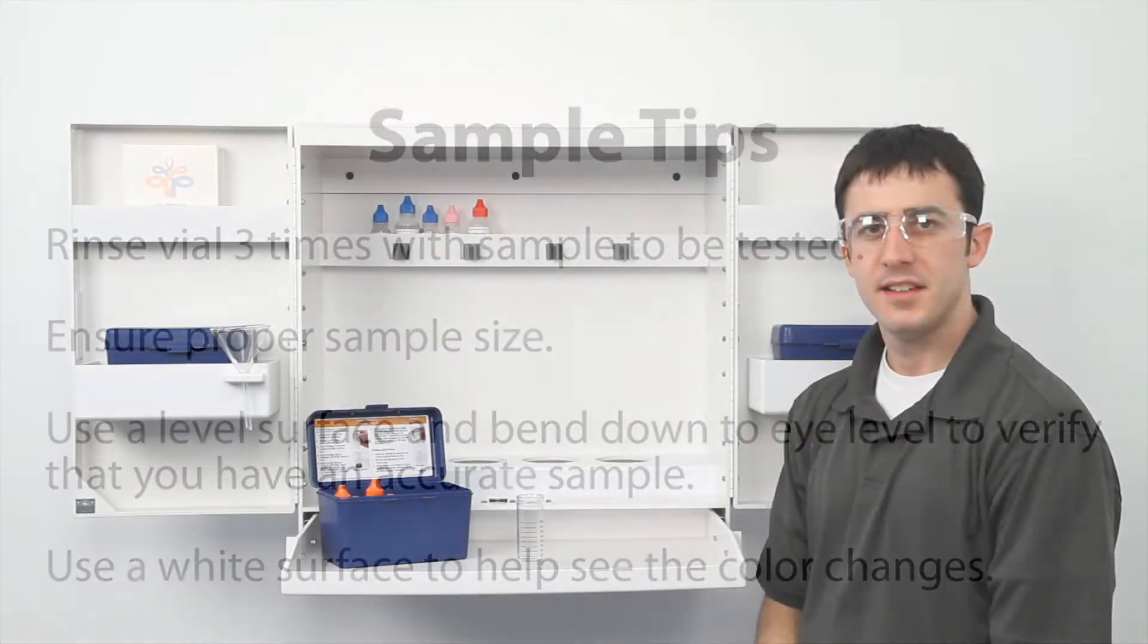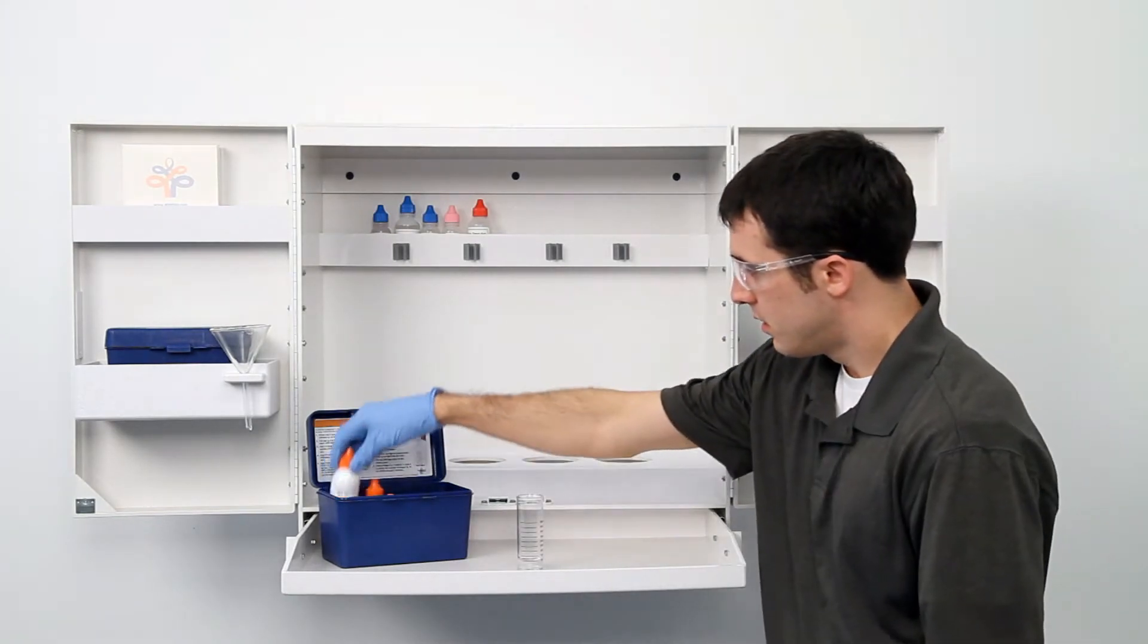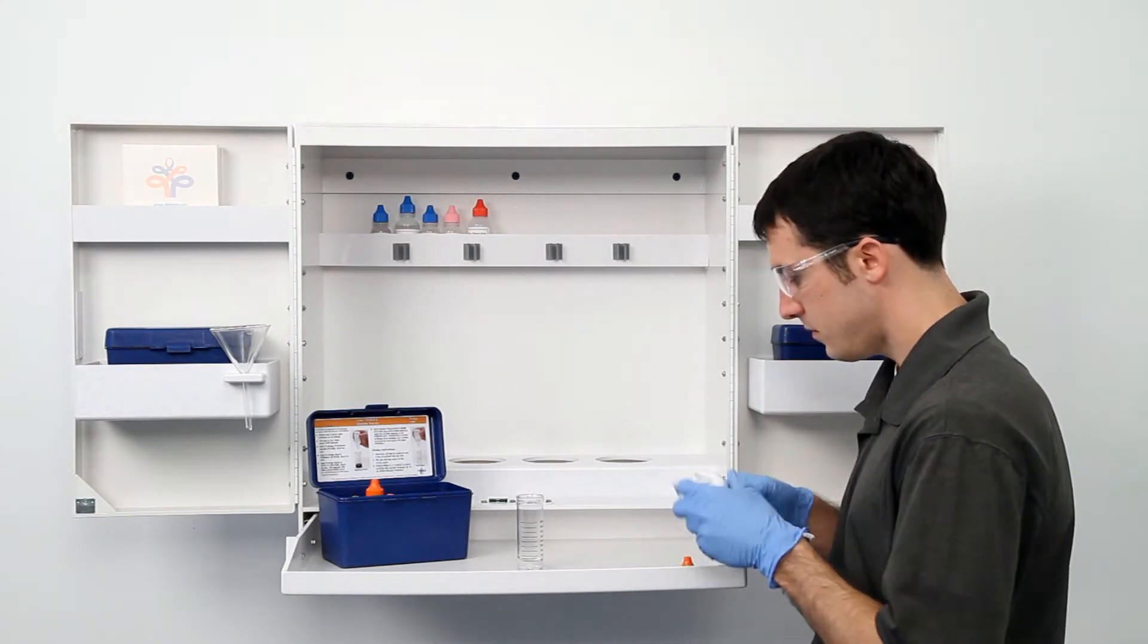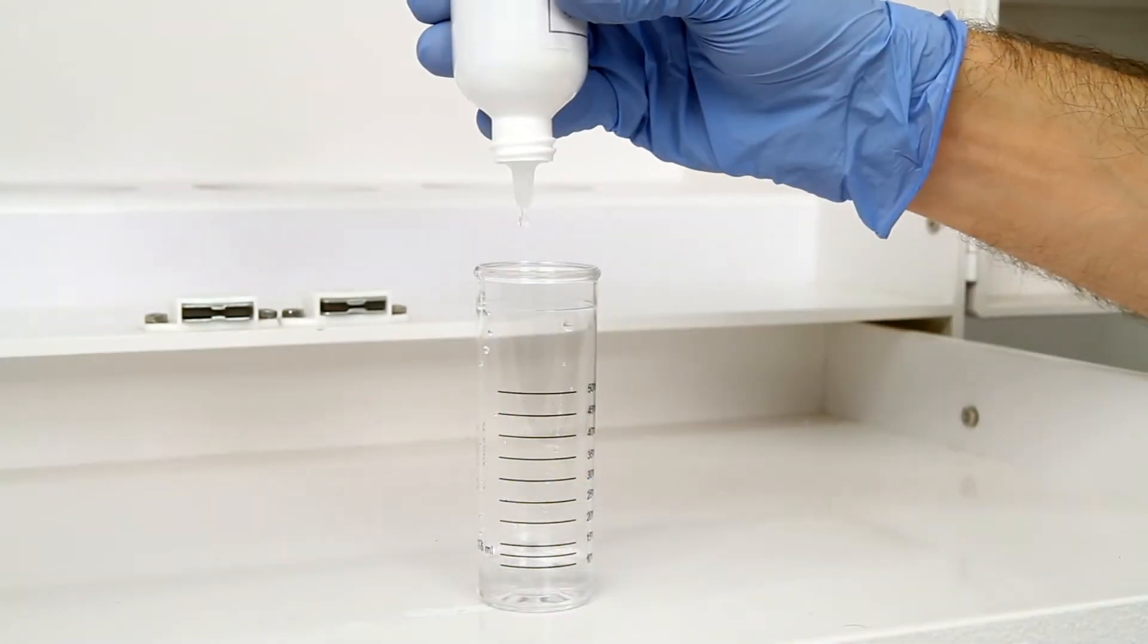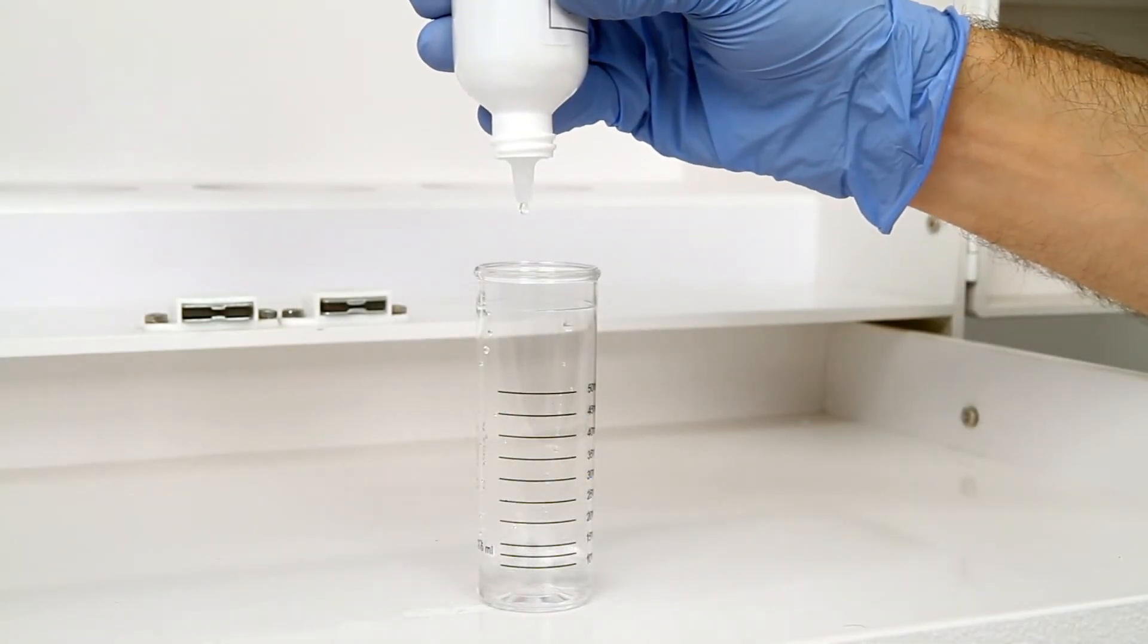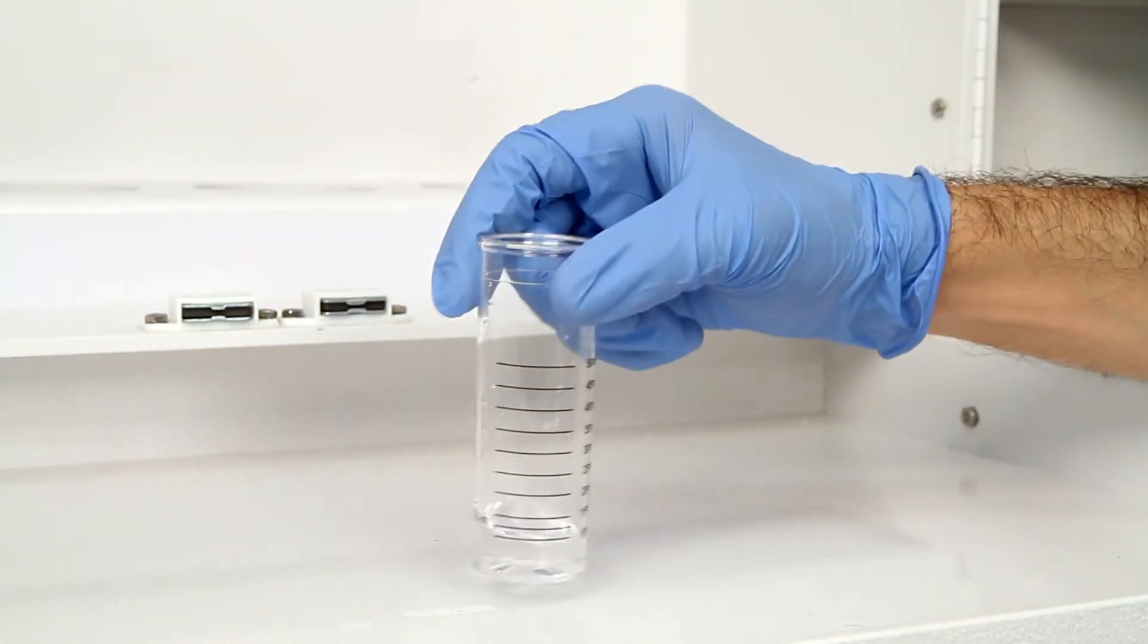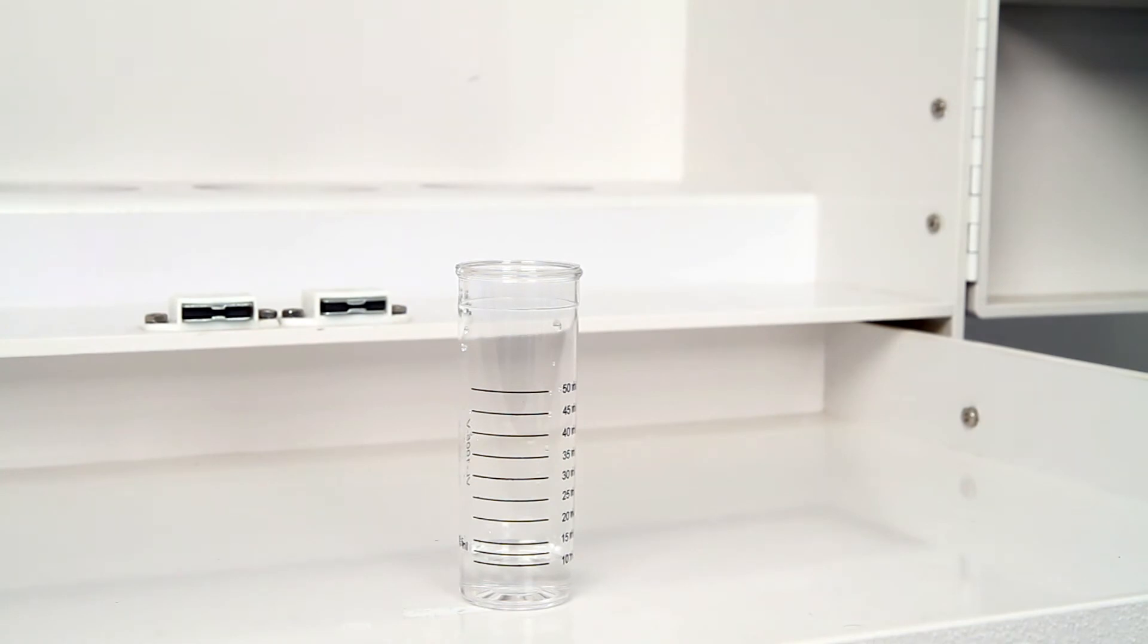Once you have collected an accurate sample, the next step is to add ten drops of potassium iodide. The bottle contains a dropper tip, so it's important to hold the bottle vertically to get a consistent drop size. After the addition of each reagent, swirl the vial for five seconds to make sure the reagents are properly mixed. If the chlorine concentration is high, the sample may turn slightly yellow at this point.